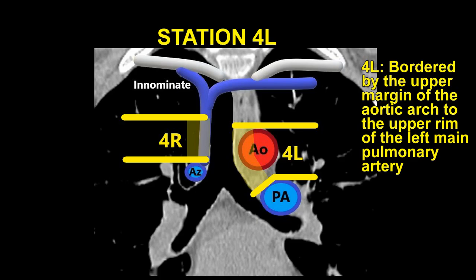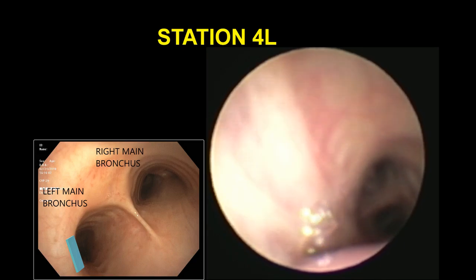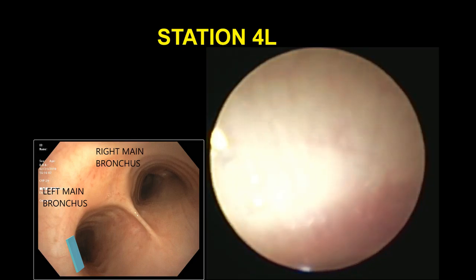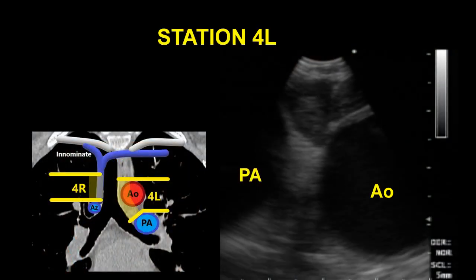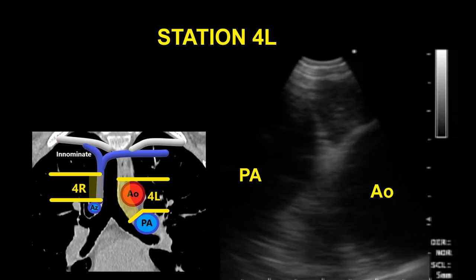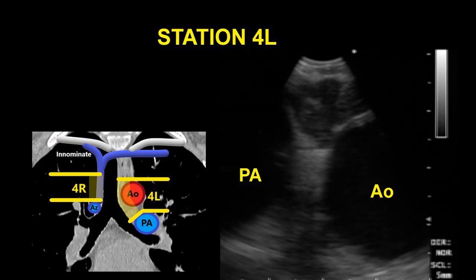Station 4L, the left lower paratracheal region, is bordered by the upper margin of the aortic arch to the upper rim of the left main pulmonary artery. To visualize Station 4L, the scope is placed in the proximal left main stem bronchus at the level of the main carina with the transducer oriented to the left towards the 9 o'clock position. The lymph node is seen above the pulmonary artery at the 9 o'clock position distally and below the aortic arch at the 3 o'clock position proximally.